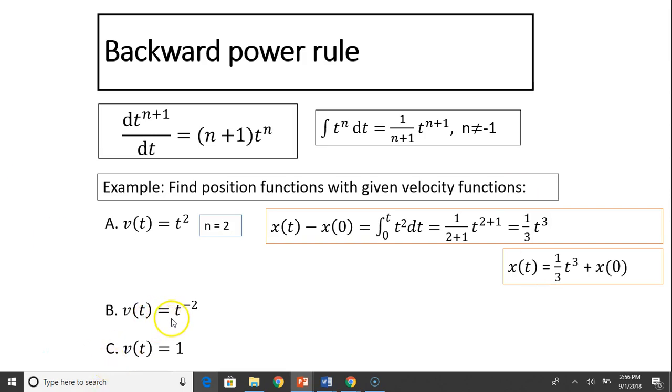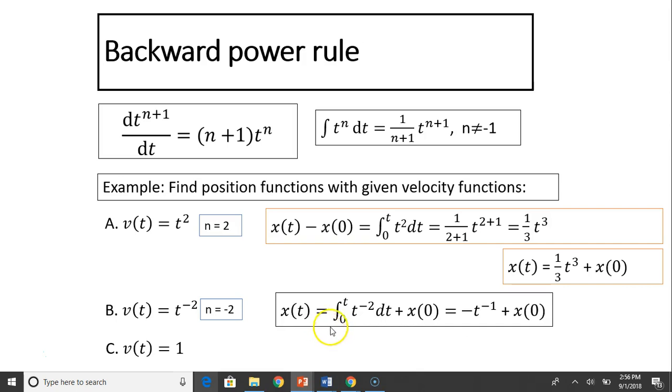Next one, v(t) equals t^(-2). So in this case, n equals negative 2. Again, plug into the equation, you should get negative t^(-1) plus x at t equals 0. So sometimes we can write down x naught. That's the same thing as x when t equals 0.